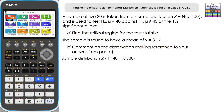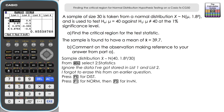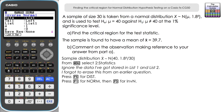To find the critical region on the calculator, go to Statistics mode and press F5 for distribution, then F1 for normal. We want the inverse normal, so press F3. Then press F2 for Var to input variables from our sample distribution.